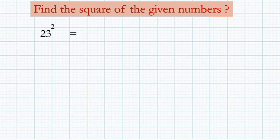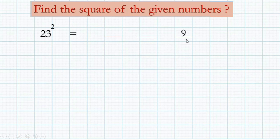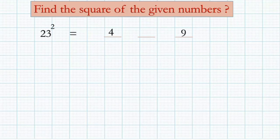23 squared. First, you have to divide the answer into three parts — three dashes needed. Here in 23, three is in the units place and two is in the tens place, and always we should start from right to left. Three squared you have to write in the last dash, and two squared in the first.